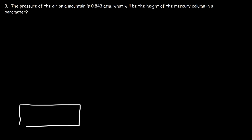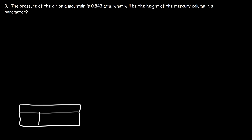The pressure of the air on a mountain is 0.843 ATM. What will be the height of the mercury column in a barometer? We can produce a mercury barometer by pouring mercury into a compartment, filling a test tube with mercury, and flipping it upside down to remove any air molecules — so that space is a vacuum. Our goal is to calculate the height of the mercury column.